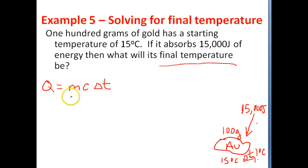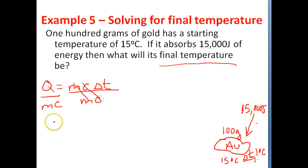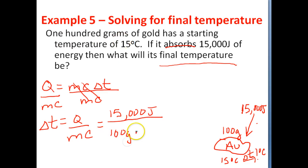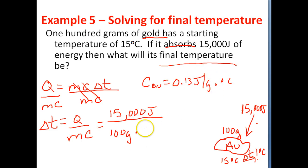We start with the thermal energy equation Q equals mcΔT and solve for delta T by dividing both sides by M and C. The formula becomes delta T equals Q over M times C. Q is a positive 15,000 joules since it's being absorbed. The mass of the gold is 100 grams. From a table of specific heat values, the specific heat of gold is 0.13 joules over grams times degrees Celsius. Grams cancel, joules cancel, leaving degrees Celsius.